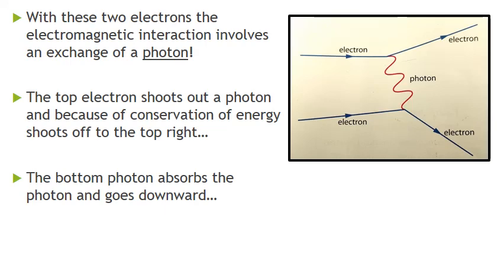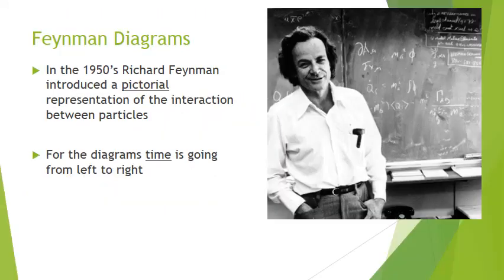The top electron shoots out a photon, which goes to the bottom electron, and the bottom electron absorbs the photon and goes downwards. Richard Feynman did a lot of things, but one of the neat things he was able to do is communicate very difficult ideas in ways that normal people — people that aren't experts in particle physics — could understand. These diagrams are very helpful, though they can get quite complex, so we're just going to look at the very basics.